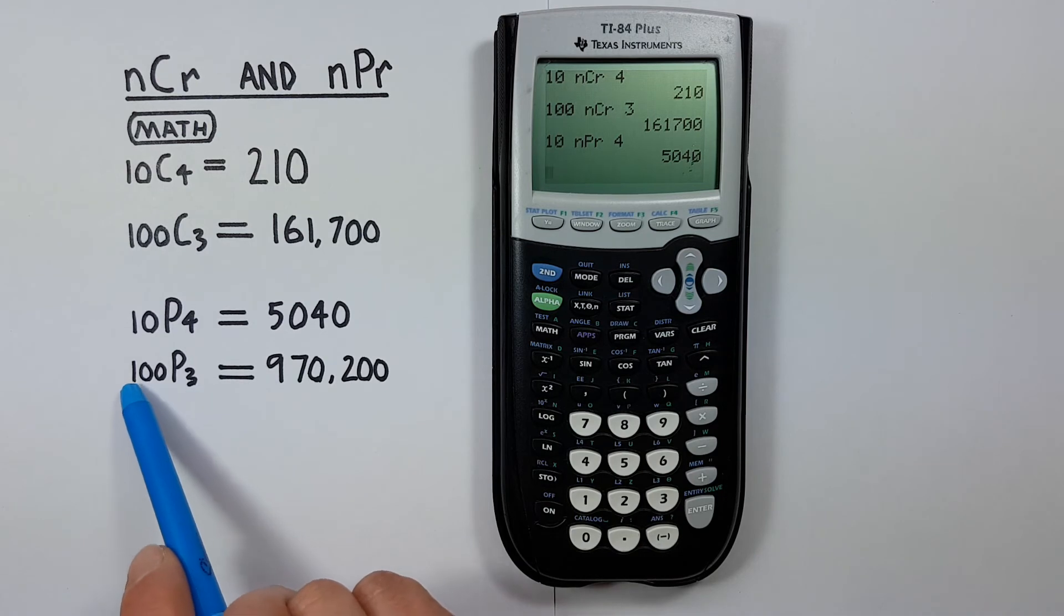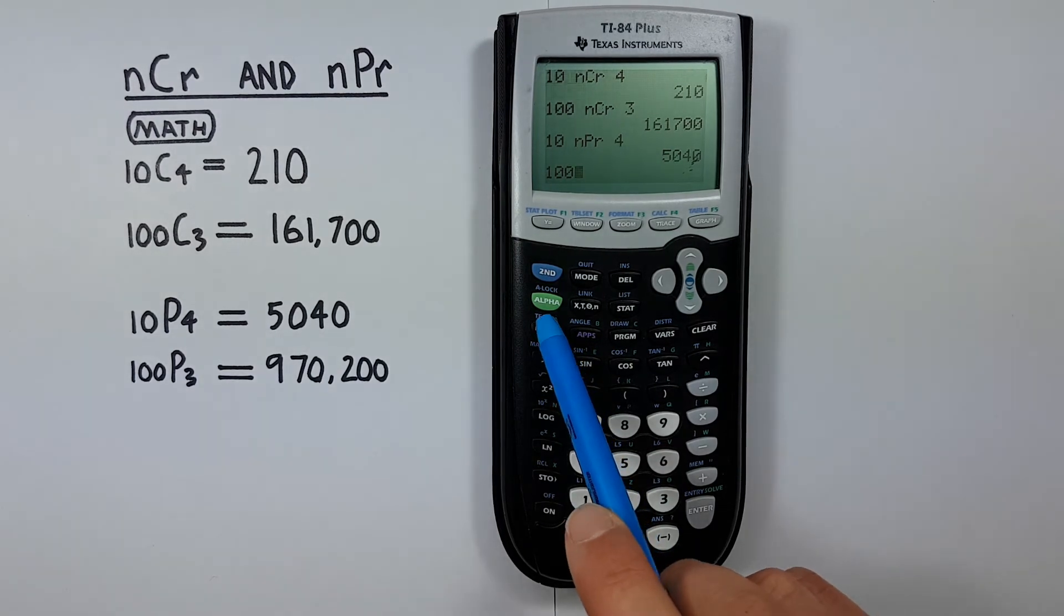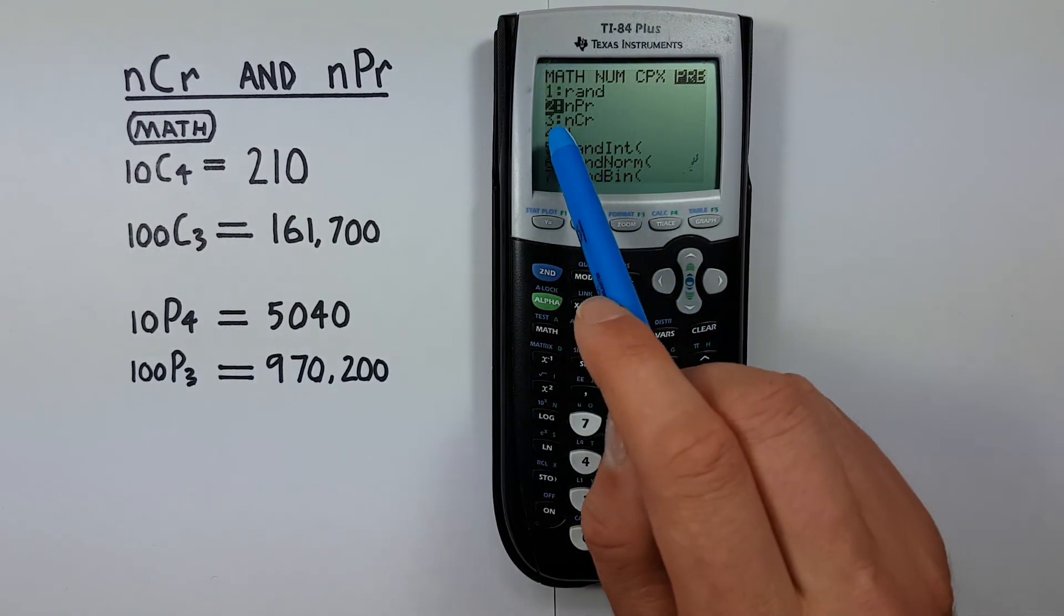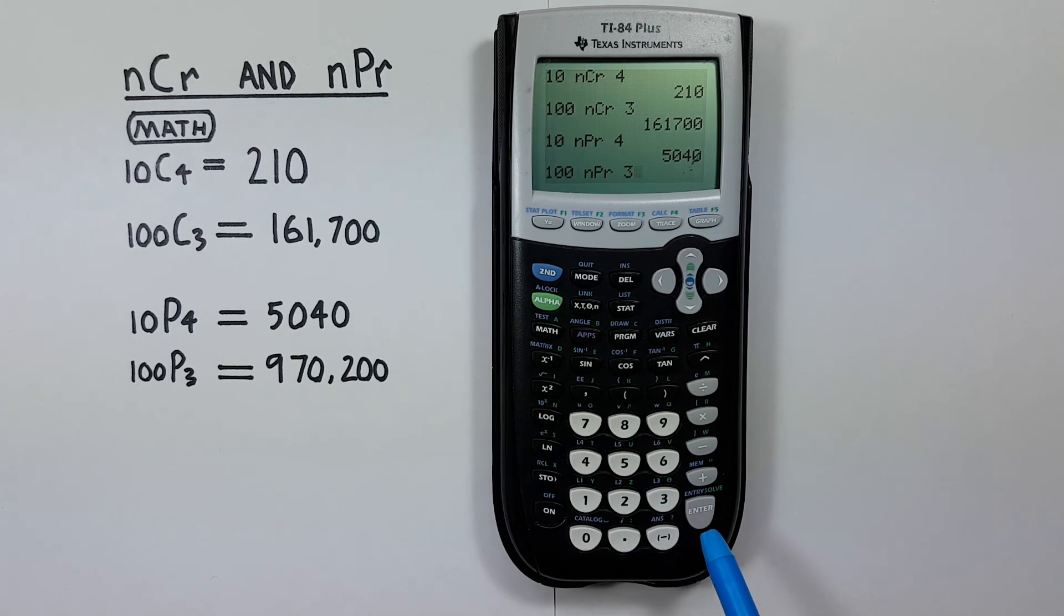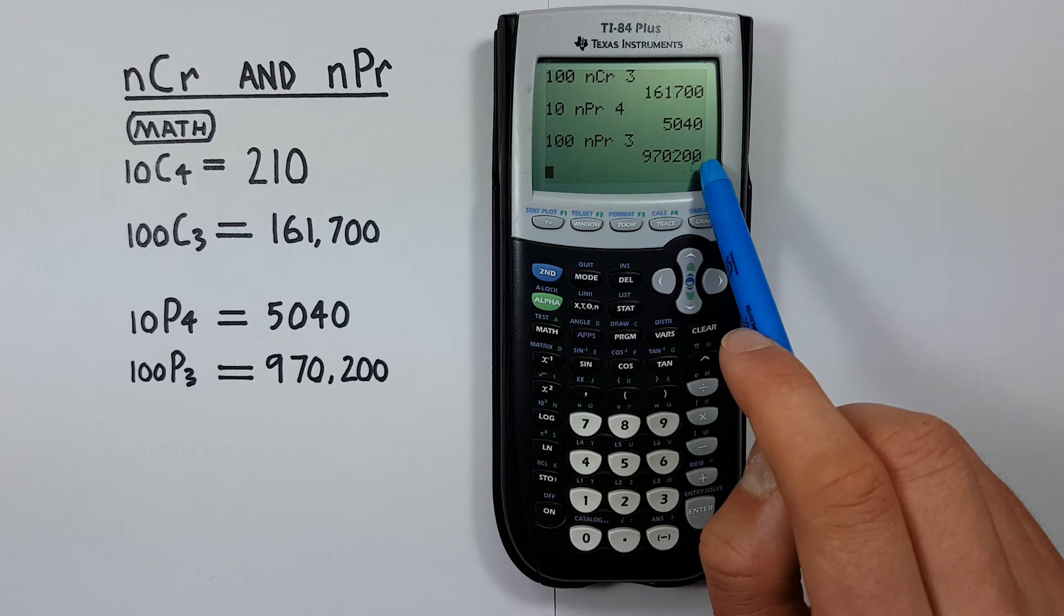And one last example. 100 choose three permutations. Again enter the 100 first. Math. Either scroll down or press two. Then enter three which is the number of objects chosen. And enter. This gives us a result of 970,200.